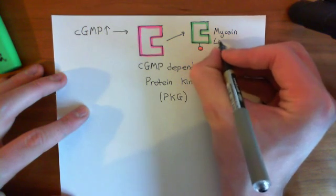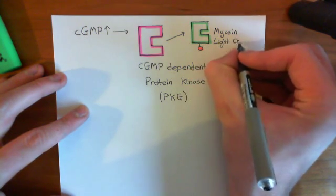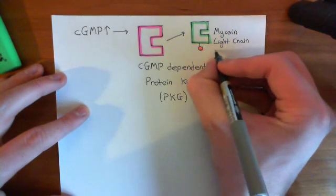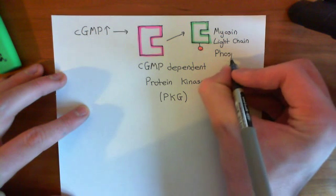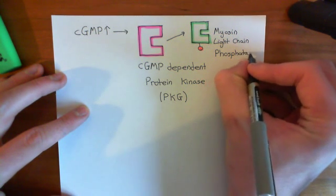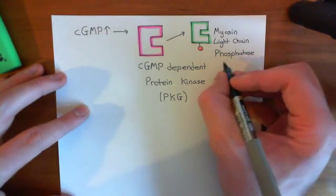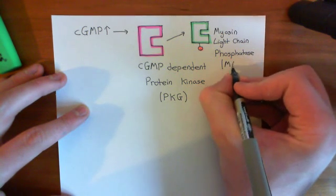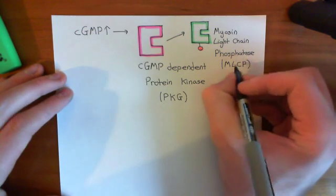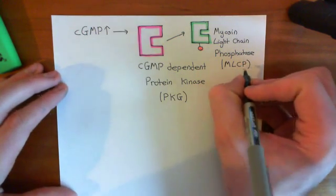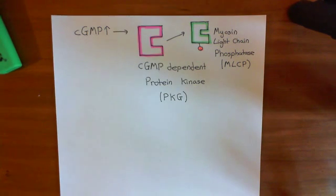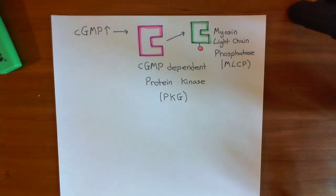Myosin light chain phosphatase removes the phosphate groups from the myosin light chains, which the myosin light chain kinase enzyme put on. If you remember, the way that you activated the myosin light chains was by phosphorylating them, and then they began the process of contraction. So if you remove those phosphate groups, you're going to stop them contracting. Myosin light chain phosphatase is often abbreviated to MLCP, just like myosin light chain kinase was abbreviated to MLCK. That's one of the ways you're going to stop contraction of the smooth muscle — by directly removing the phosphate groups that myosin light chain kinase is putting on.